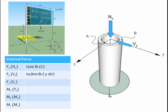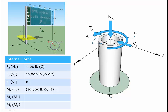In the z-direction, there are no forces on the structure. Now considering the three moments: the moment about the x-axis is a torque, resulting from the wind load on the sign. Taking the resultant wind force of 10,800 pounds acting through the centroid of the sign — which is 6 feet from the post — the torque equals 10,800 pounds times 6 feet, giving 64,800 foot-pounds about the negative x-axis.